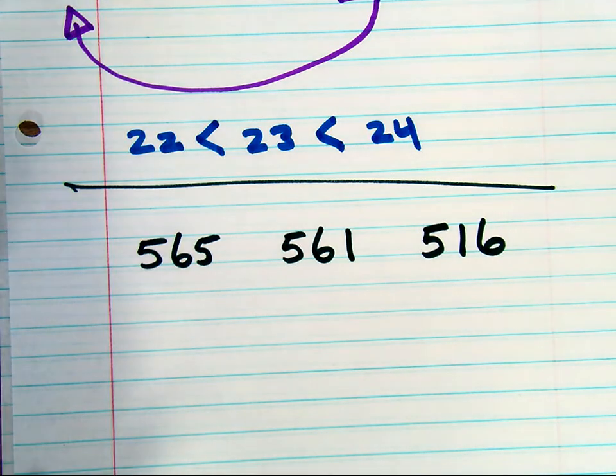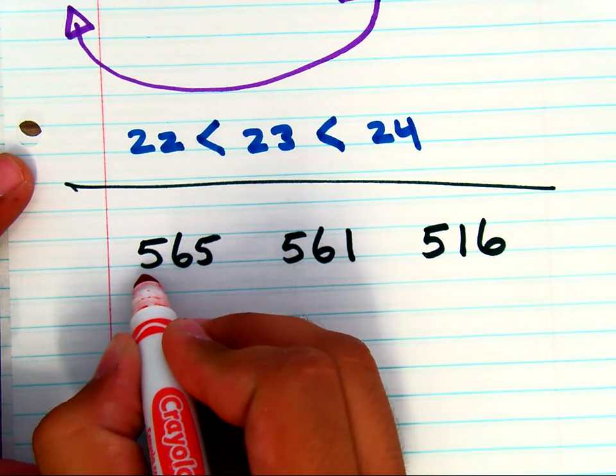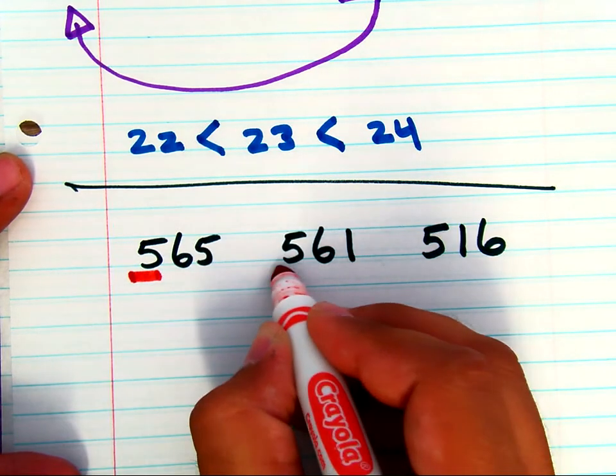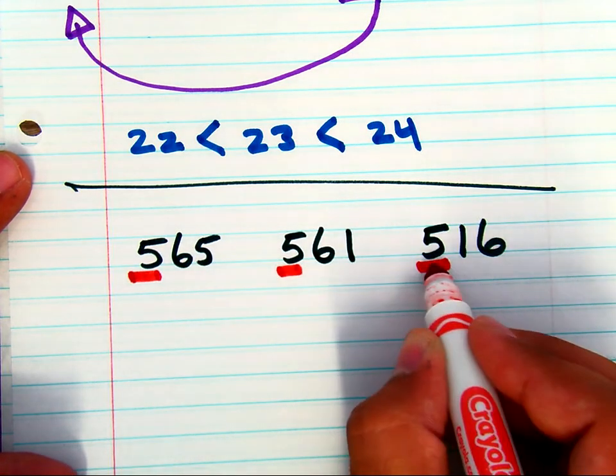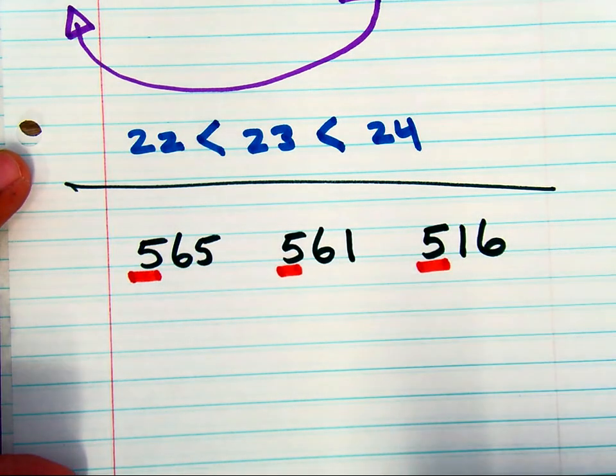Now, textbooks love to use similar numbers to try and trick you, but don't you let them. Here you want to compare all of the largest place values, the hundreds place first, and they are all the same. So that's not going to help you order these numbers.